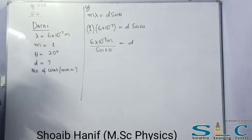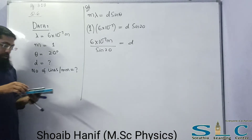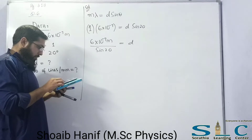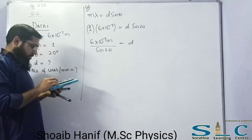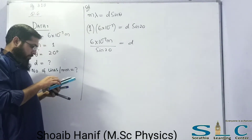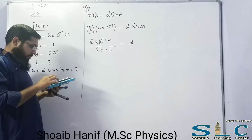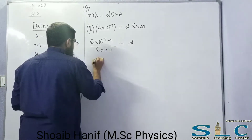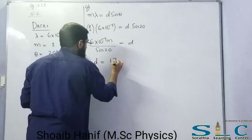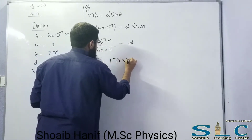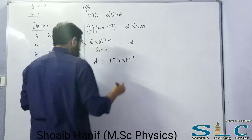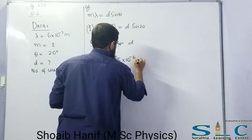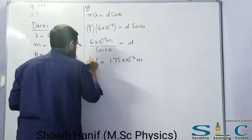Rearranging: D = 6×10⁻⁷ / sin20°. Solving this gives D = 1.75×10⁻⁶ meter. This is our value for the grating spacing D.